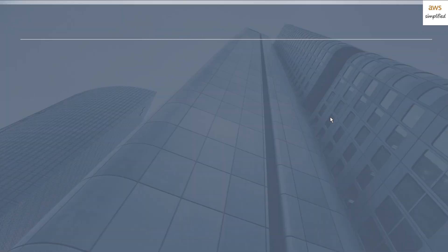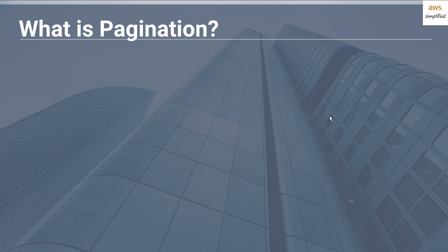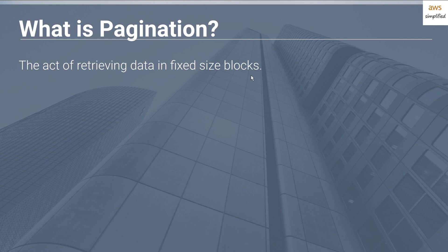The first thing I want to talk about is what pagination is as a basic concept. The classic definition of pagination is the act of retrieving data in fixed-size blocks. The analogy I like to use is: imagine you have a bucket and you're trying to move stones from one side of a river to another. You only have a fixed-size bucket, so you need to make multiple trips — back and forth — to move all the stones to the other side. That in effect is what pagination is: retrieving data in chunked buckets.